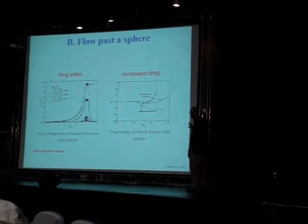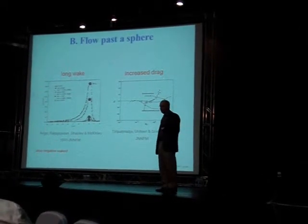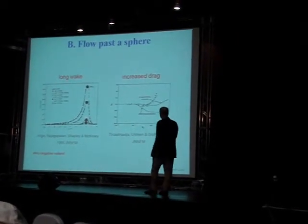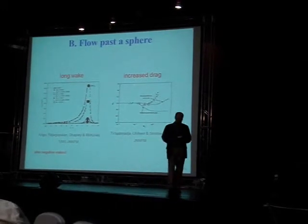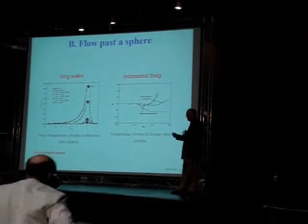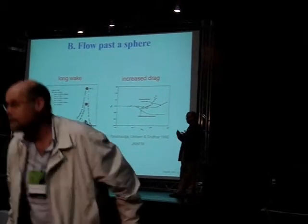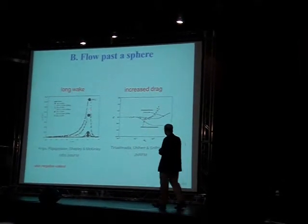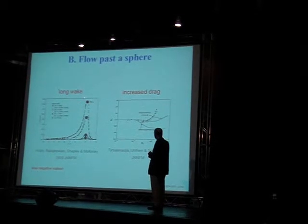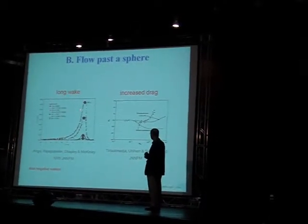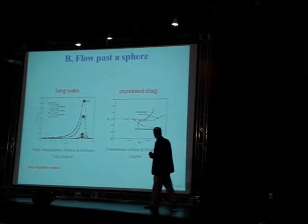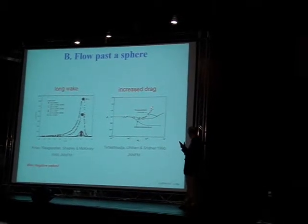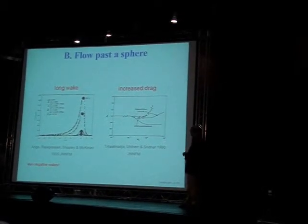This has very little engineering importance. But all theoreticians ask how do you solve the flow past a sphere. What do you find in flow past a sphere? If you move the sphere sideways at high velocity there is a very long wake. This is the velocity as a function of position. Associated with these long wakes there is a small increase in drag, a 30% increase in drag with velocity.